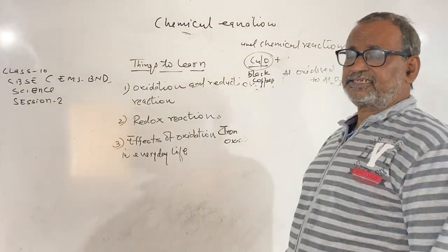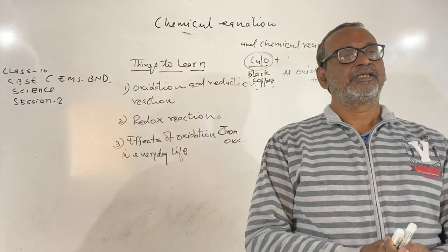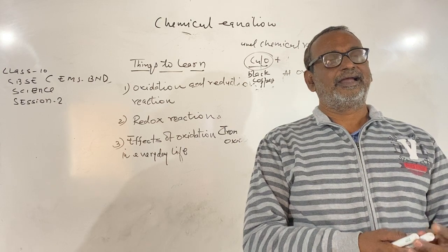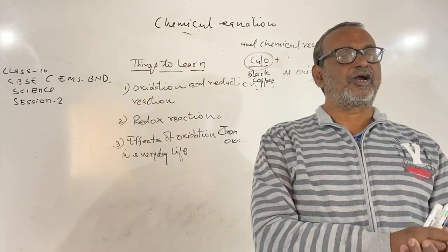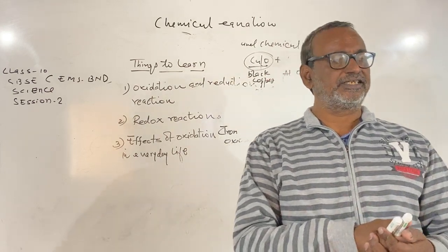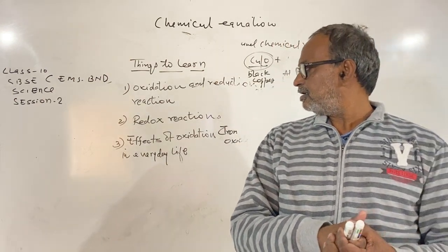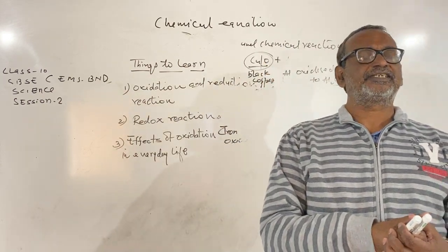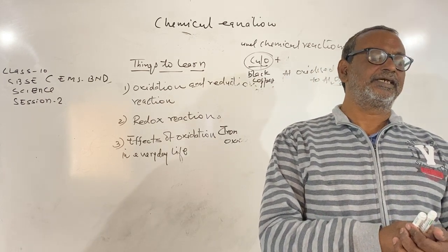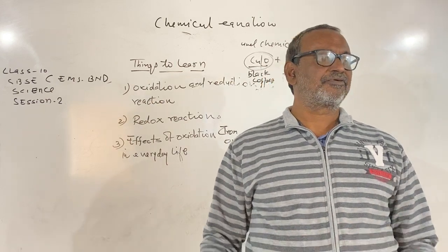Now, oxidation reactions play an important role in our everyday life. It is actually the oxidation process in our body which is responsible for the process of aging. In this part we shall discuss two examples of oxidation in everyday life: number one, rancidity, and number two, rusting of iron.